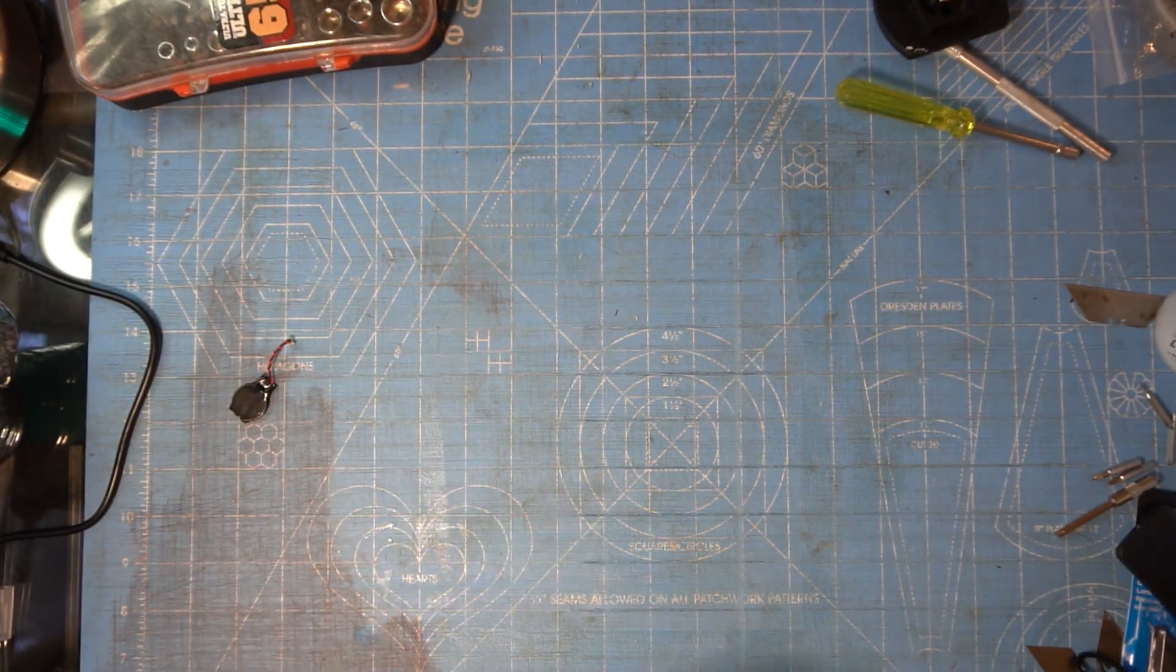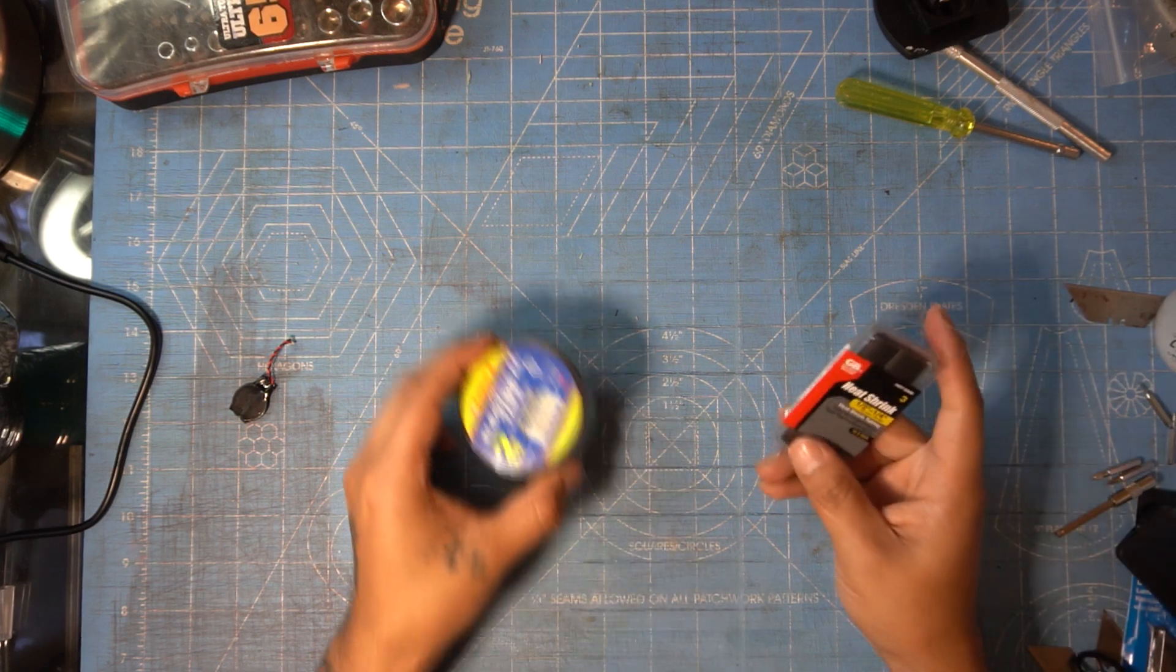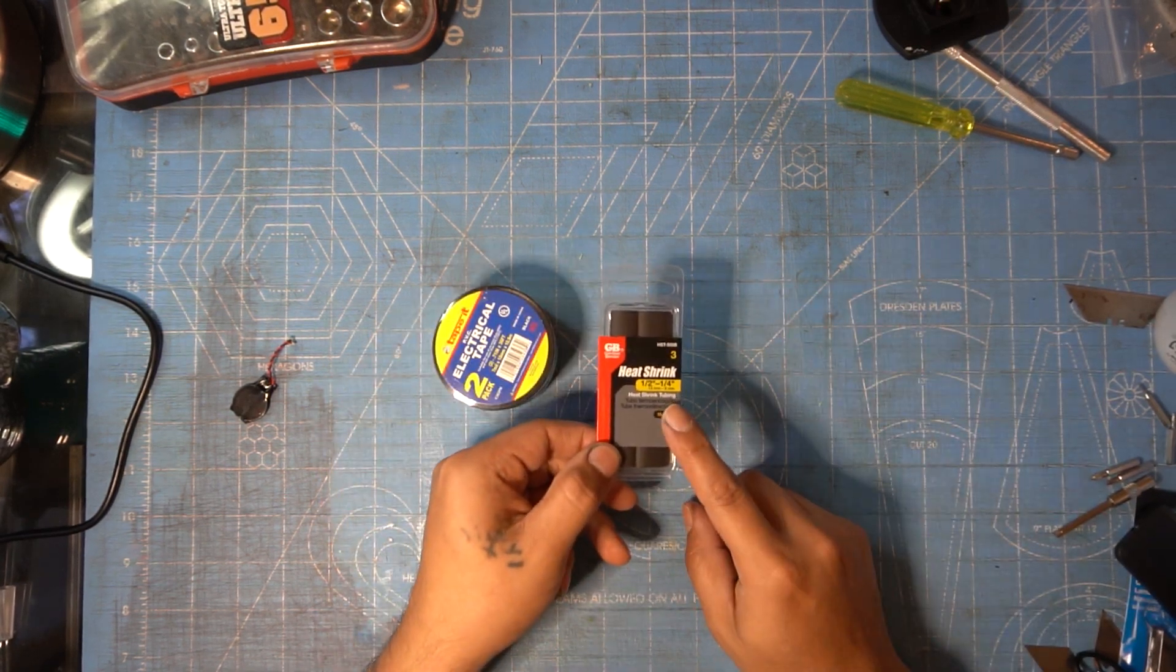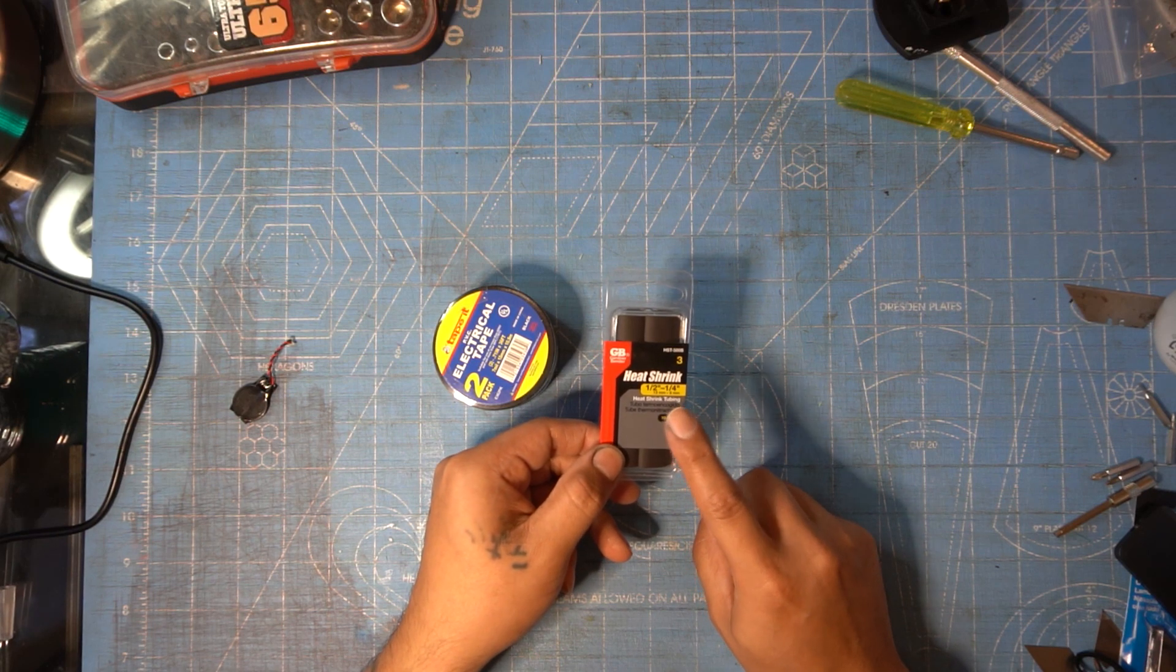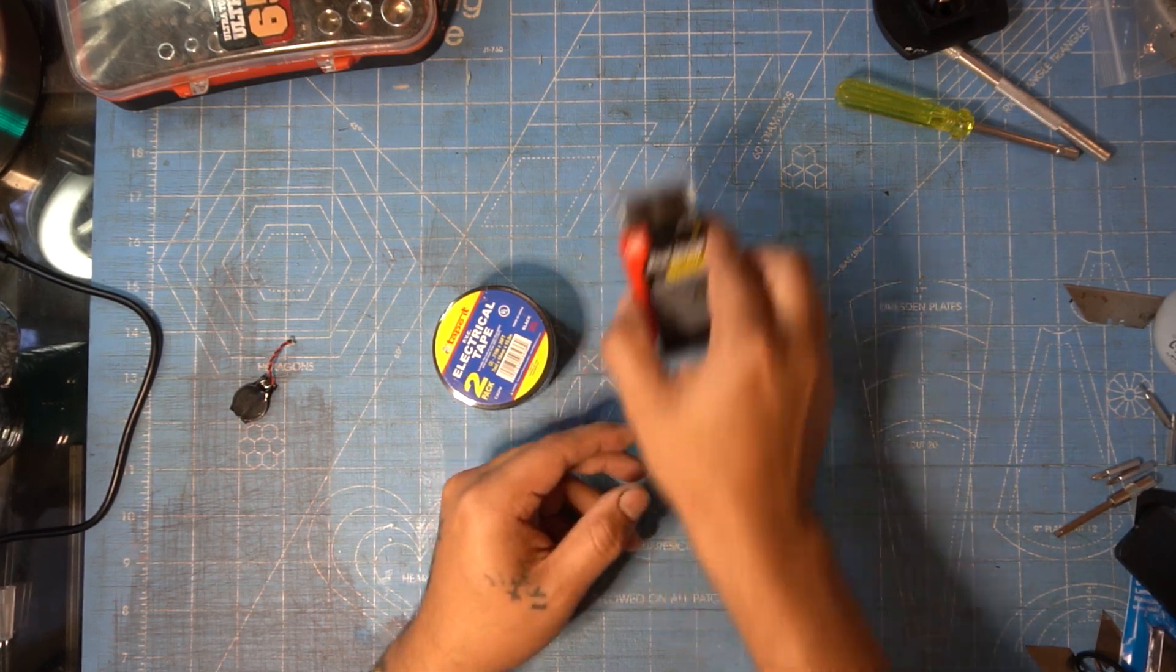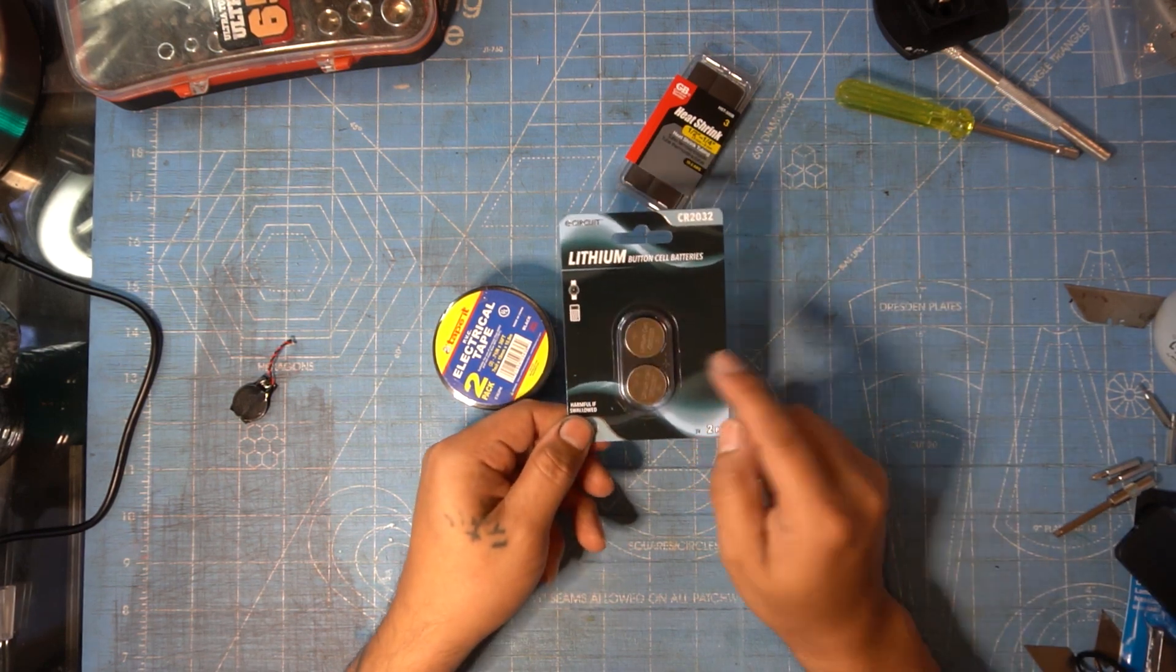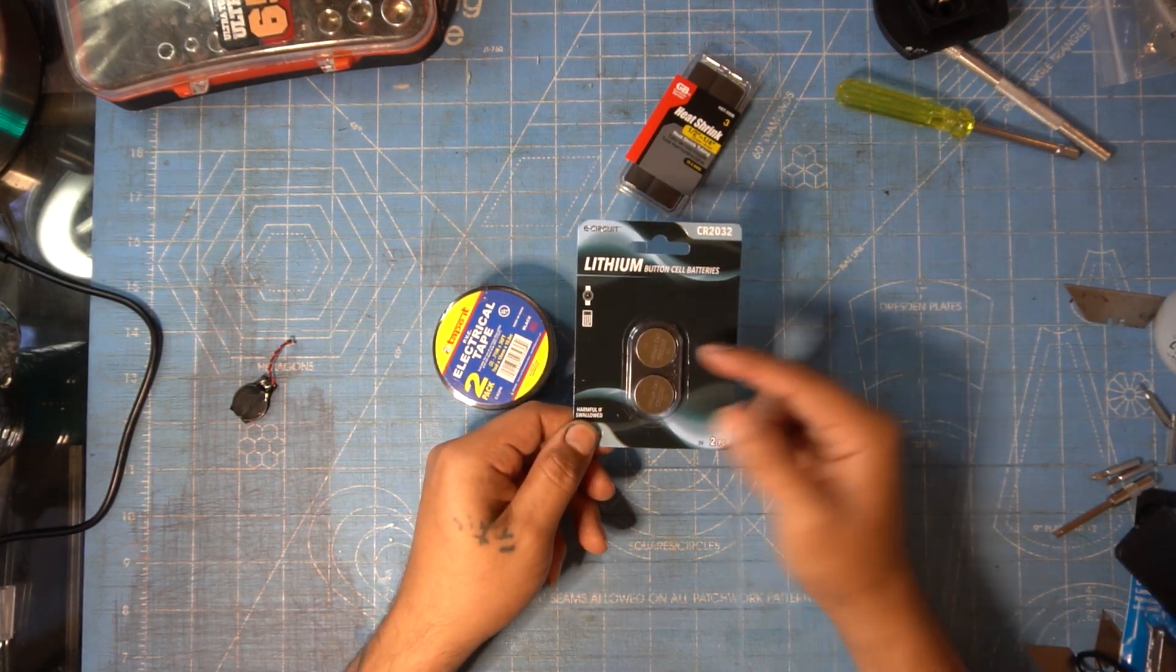So first we're gonna need a few things. You're gonna need some electrical tape, this heat shrink. Now this heat shrink I'm not sure if I'm gonna use it but stay tuned for that, and a pack of batteries.